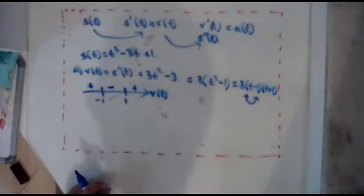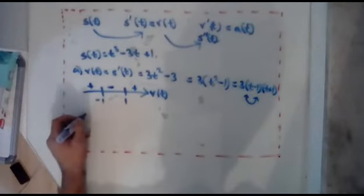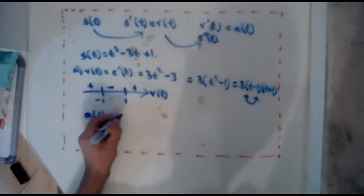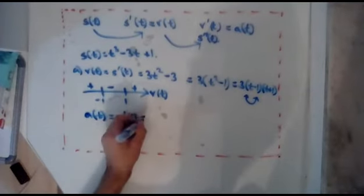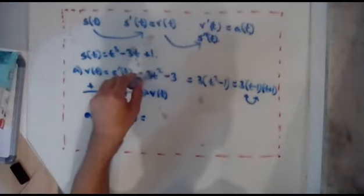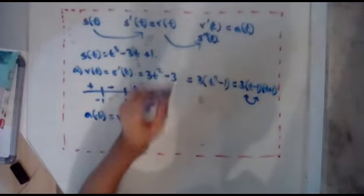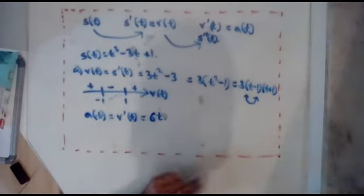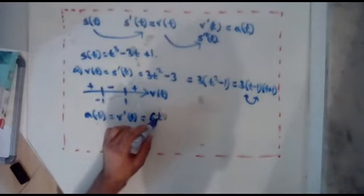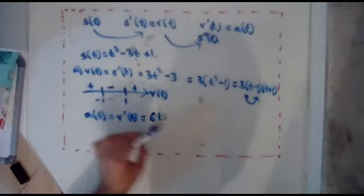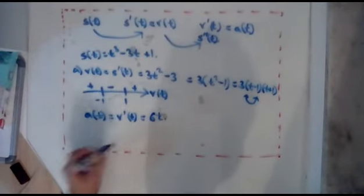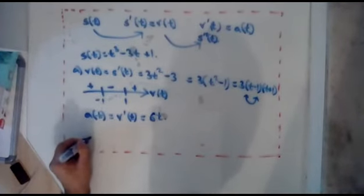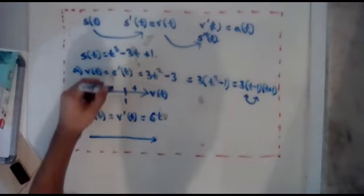And then we differentiate again to get the acceleration function. So a of t equals v dashed t. So we differentiate this. So that is going to be bringing the 2 to the front. 2 times 3 is 6. That will be 6t. That will disappear, 6t. And that's a very friendly function. It has a zero at t equals 0. It's just a straight line. Imagine think of y equals 6x and gradient 6. So it's literally just at 0. I'm trying to line these up.